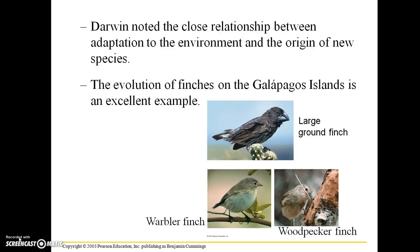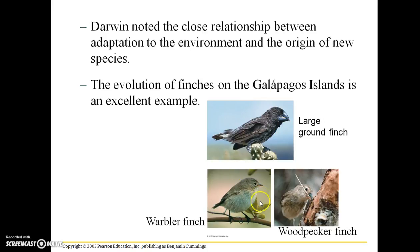Darwin noted the close relationship between adaptation to the environment and the origin of new species. The evolution of finches on the Galapagos Islands is an excellent example. We have several different species of finches — a large ground finch, a warbler finch, and a woodpecker finch — and they all share a common ancestor. However, they took different evolutionary paths: certain subsets of the ancestral population evolved into the large ground finch, another into the warbler finch, and another into the woodpecker finch.